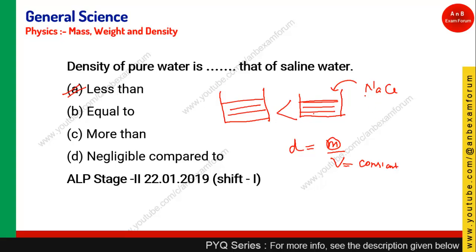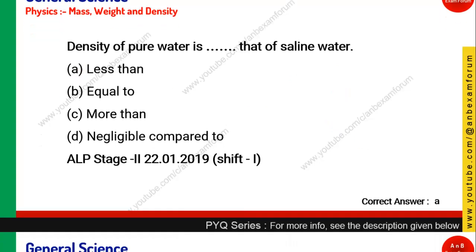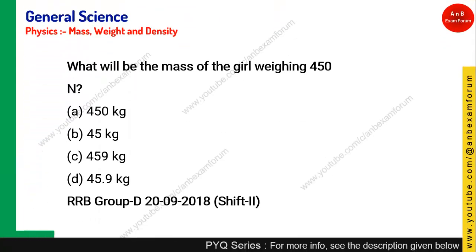The dissolved sodium and chloride ions add mass — however small — to the water. If mass increases while volume stays constant, density increases. Therefore the density of saline water is greater than pure water; in other words, the density of pure water is less than saline water. Option A is the right answer.